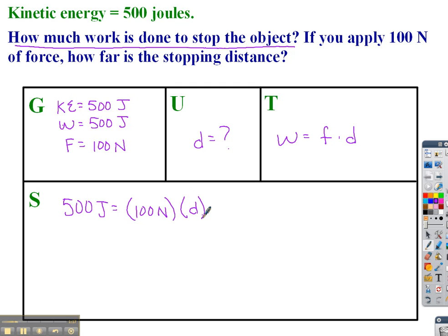And D is what I'm solving for, and right now D is being multiplied by 100 newtons. So to get D by itself, I'm going to need to divide both sides by 100 newtons. That cancels, leaving me D equals a relatively easy math problem. 500 divided by 100 is 5. The problem is the units.